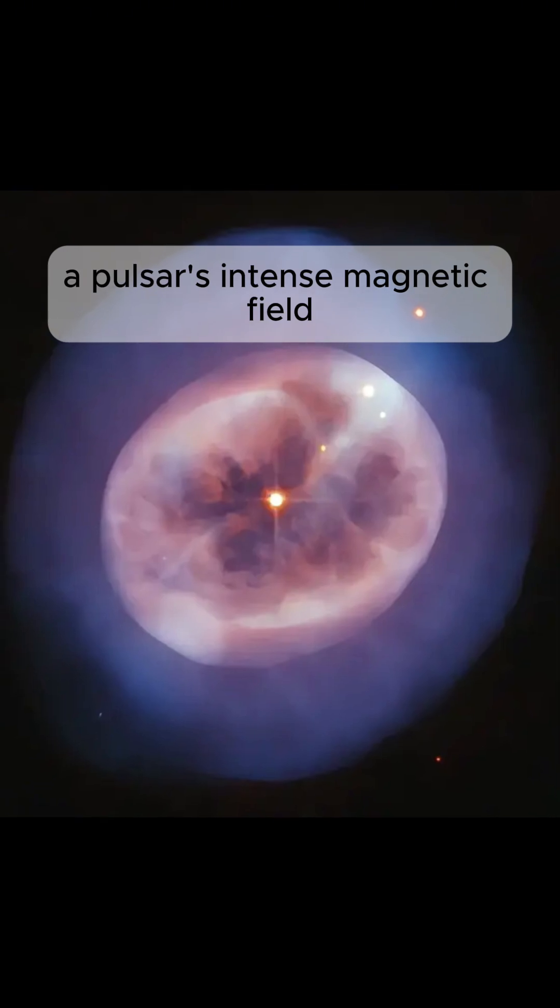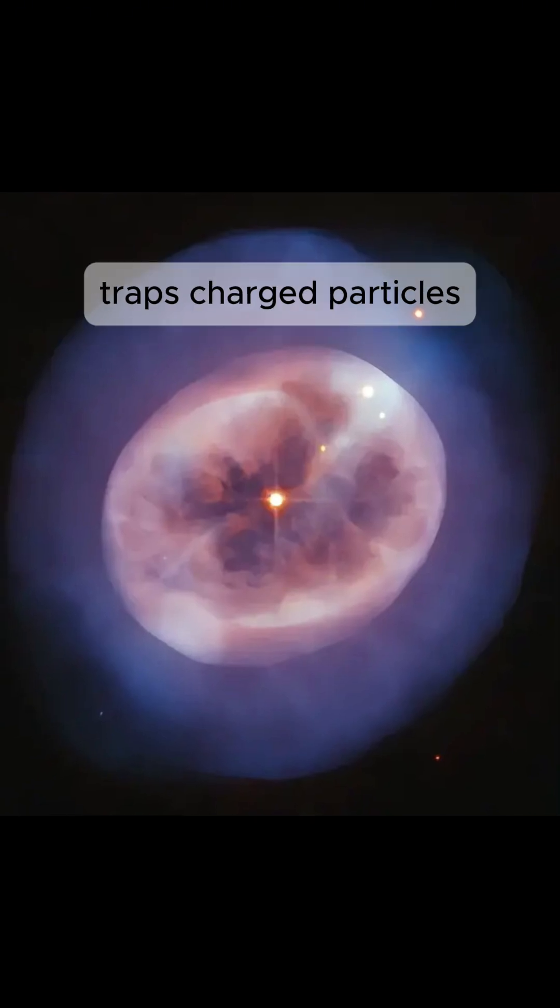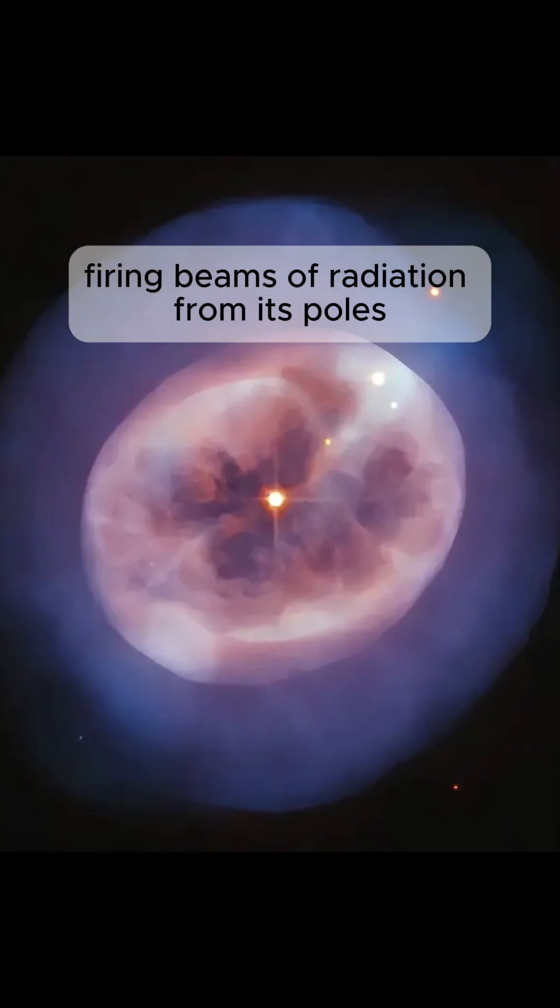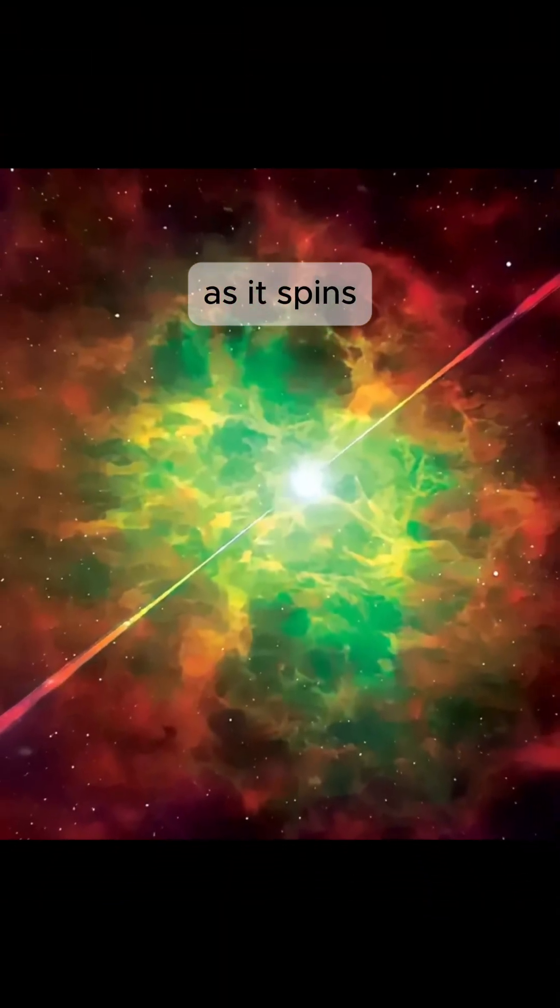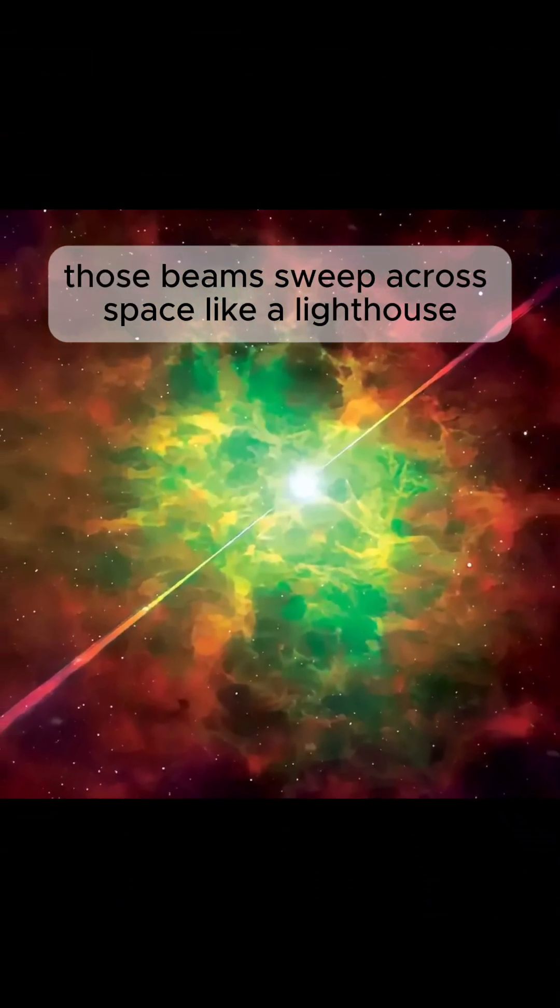A pulsar's intense magnetic field traps charged particles, firing beams of radiation from its poles. As it spins, those beams sweep across space like a lighthouse.